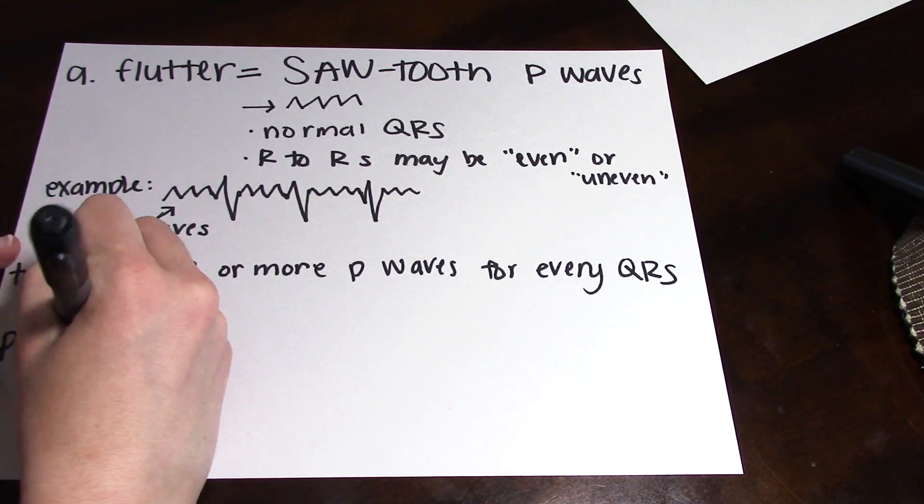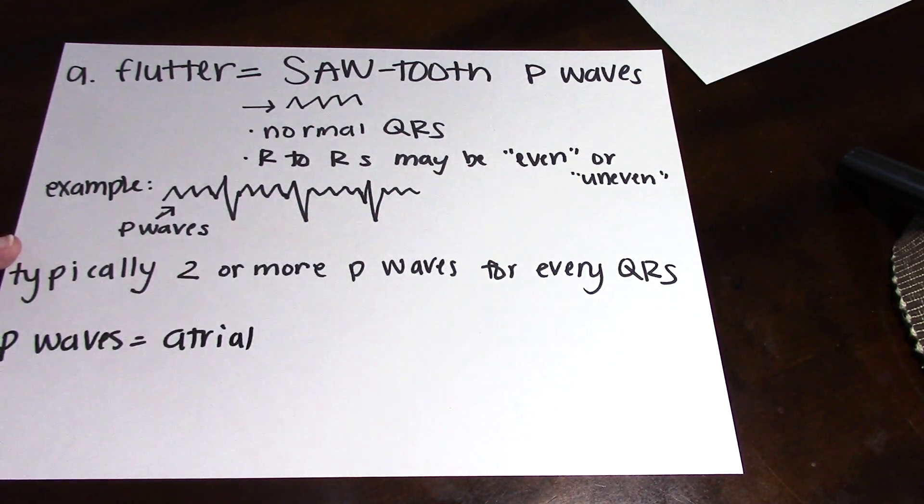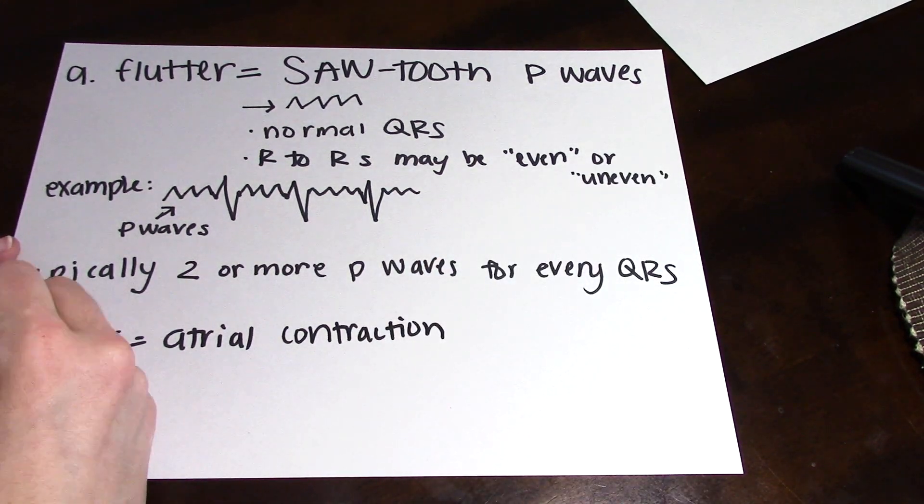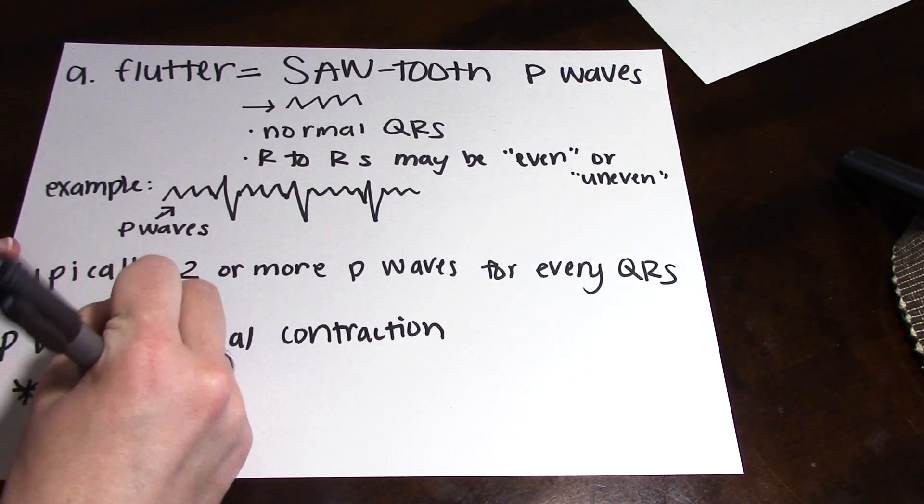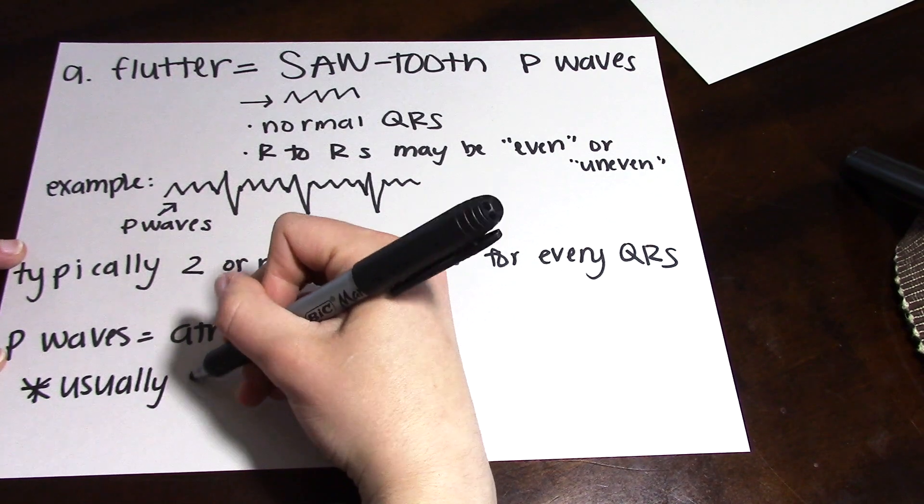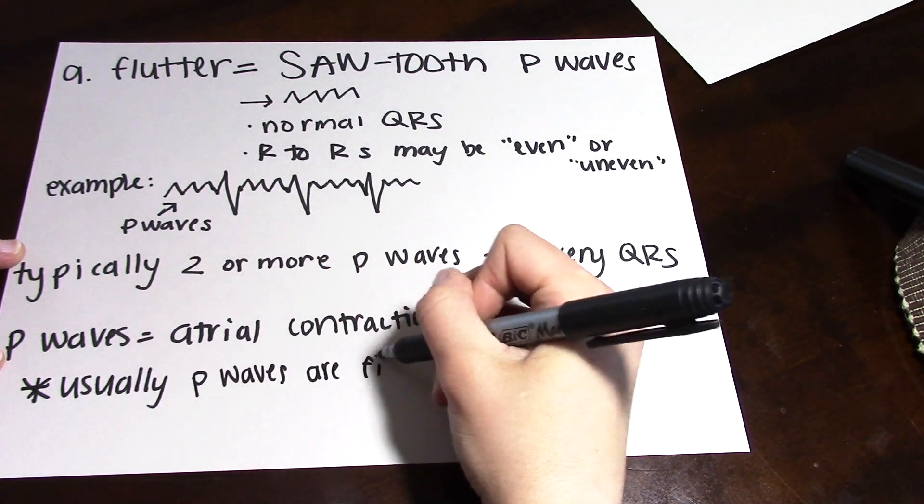And if you remember, P waves equal atrial contraction. So this means that the atriums are firing at a more rapid rate, usually over 250 beats per minute the atrium is contracting.